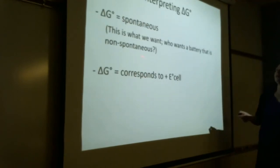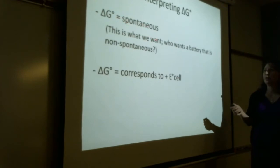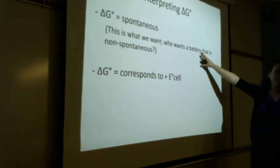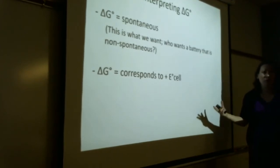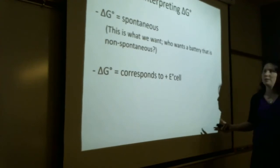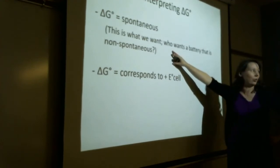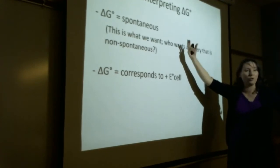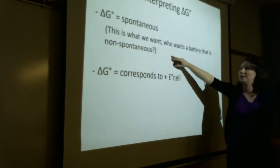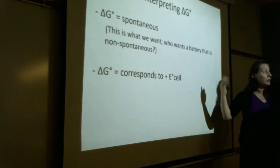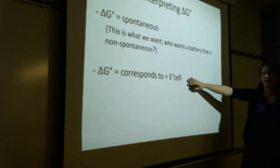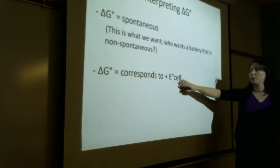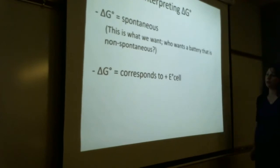Negative delta G is spontaneous — that's what we want. If you have a non-spontaneous cell, you're going to have to add effort to it. For instance, when you charge your battery, that's non-spontaneous — you have to apply electricity to charge it. So if you want your battery to work spontaneously, you want it to have a negative delta G, which corresponds to a positive E-cell. Those two go hand in hand.